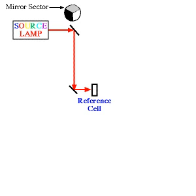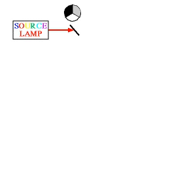When the source light is reflected at 90 degrees by the rotating disk, instead of striking the sample cuvette, it passes through the reference cuvette, which contains only solvent.